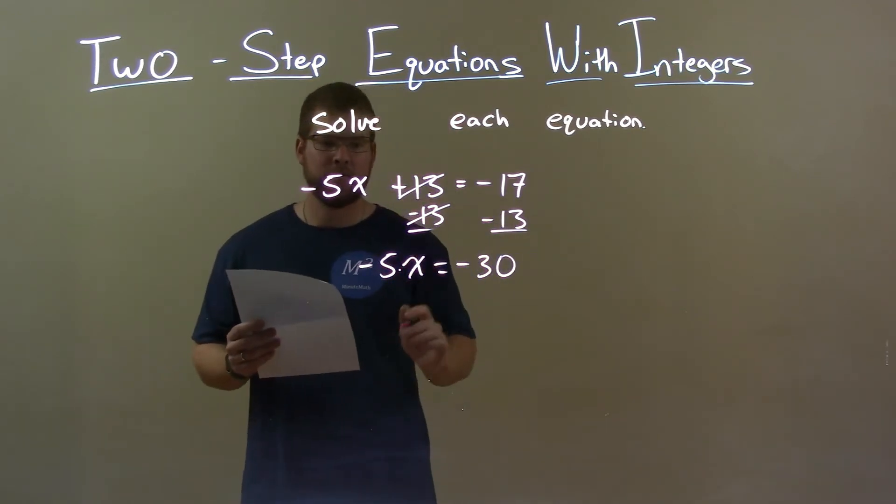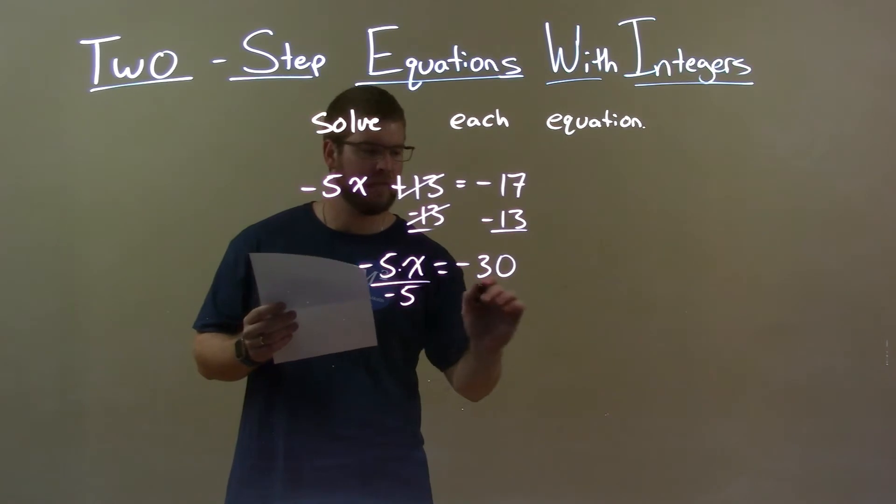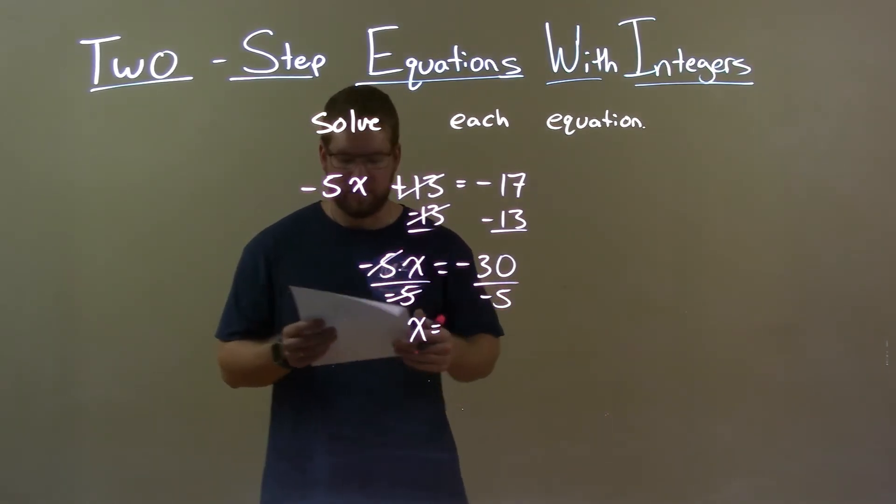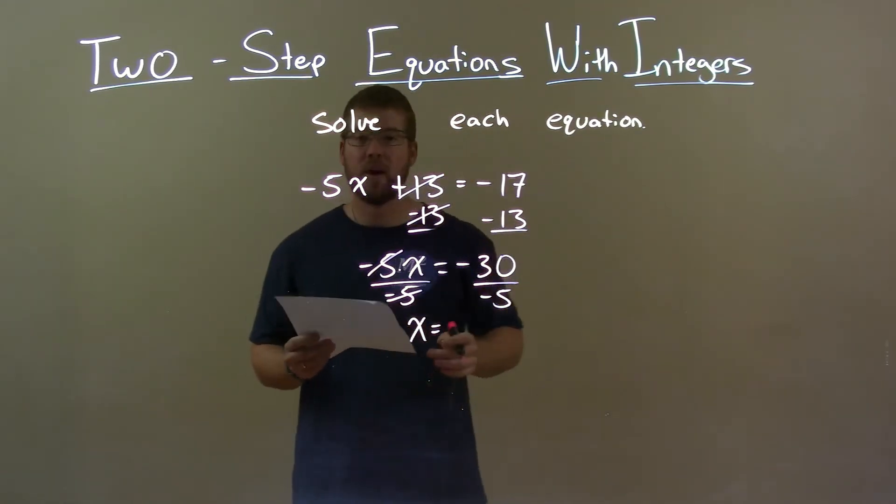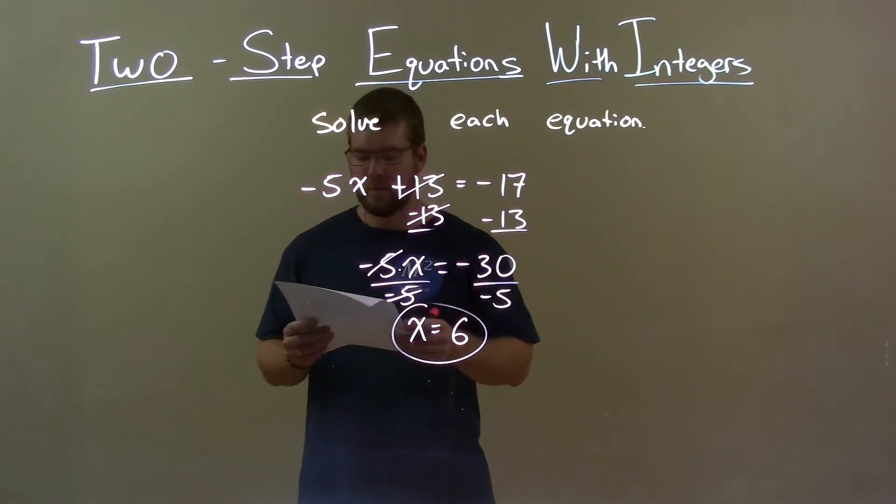Now, we're multiplied by negative 5 here, so opposite of multiplication is division. Divide by negative 5 on both sides. The negative 5's cancel, giving me x by itself on the left. On the right, negative 30 divided by negative 5 is positive 6. So my final answer is x equals 6.